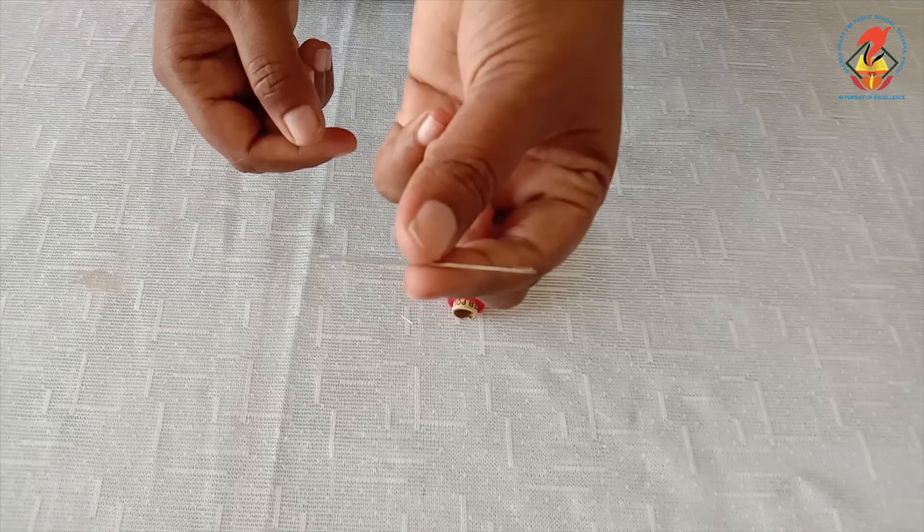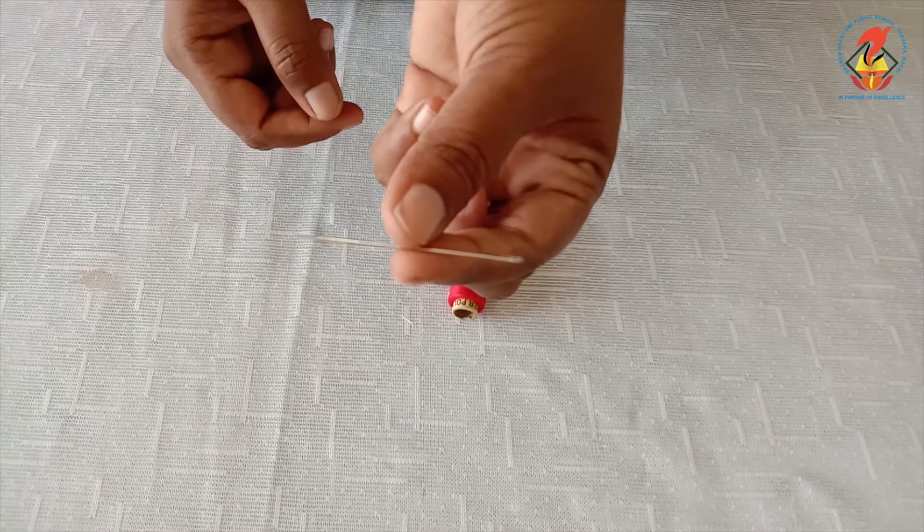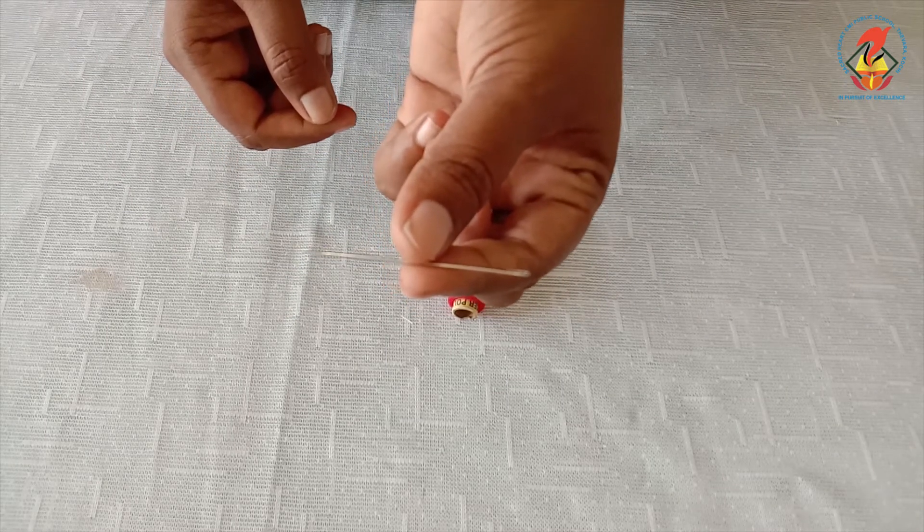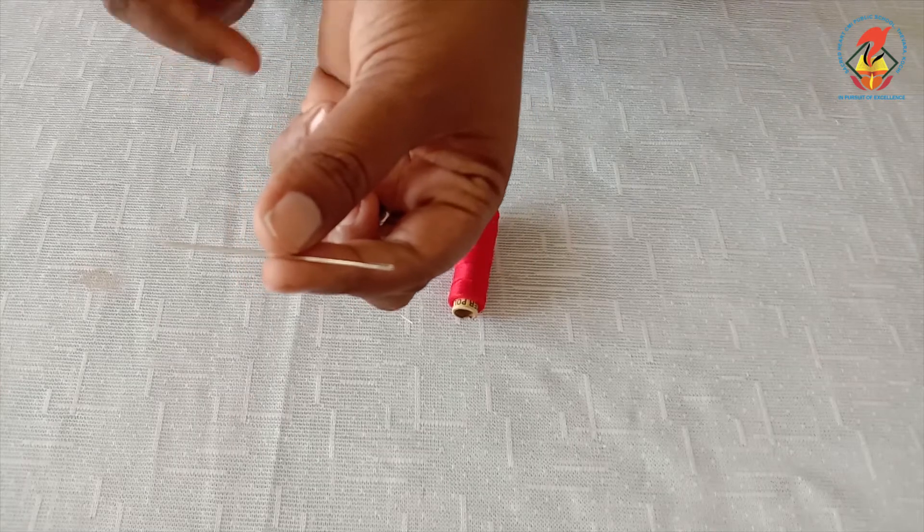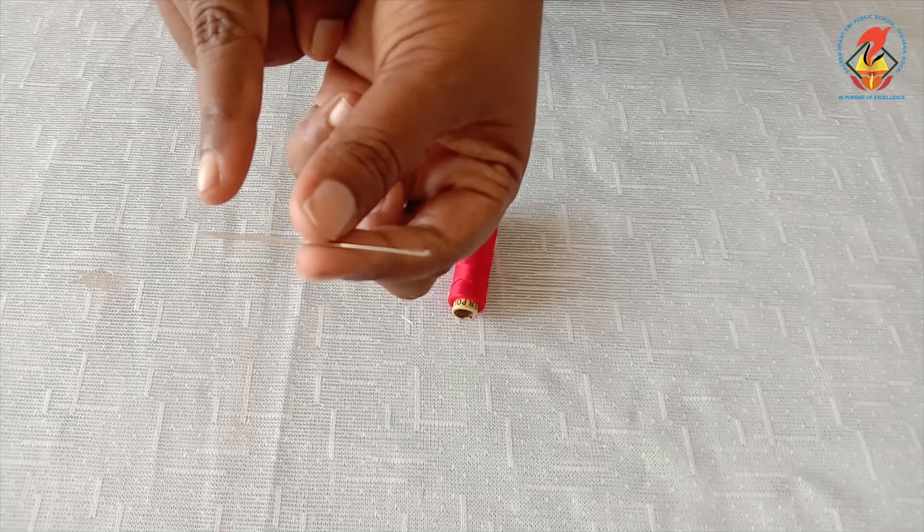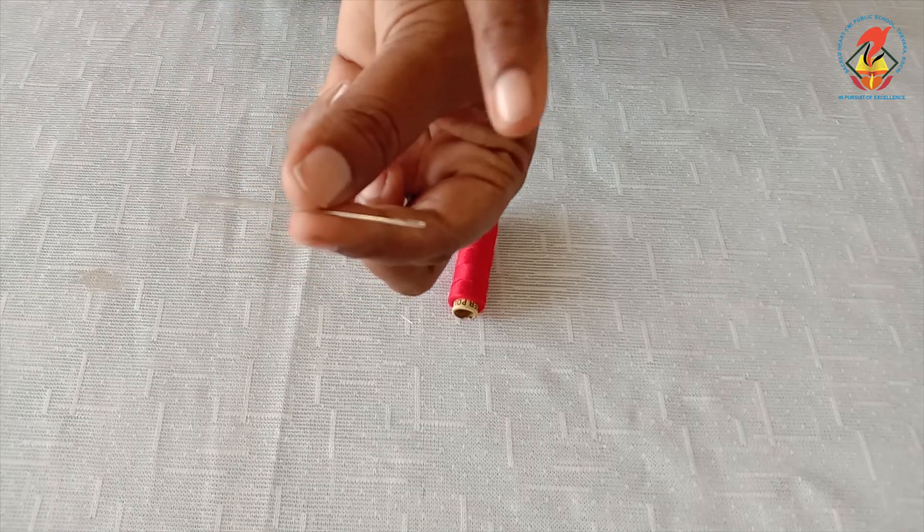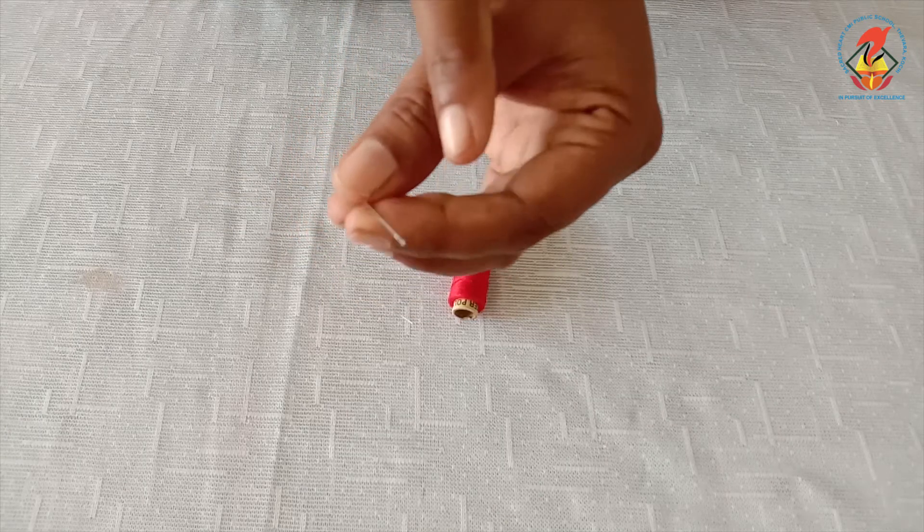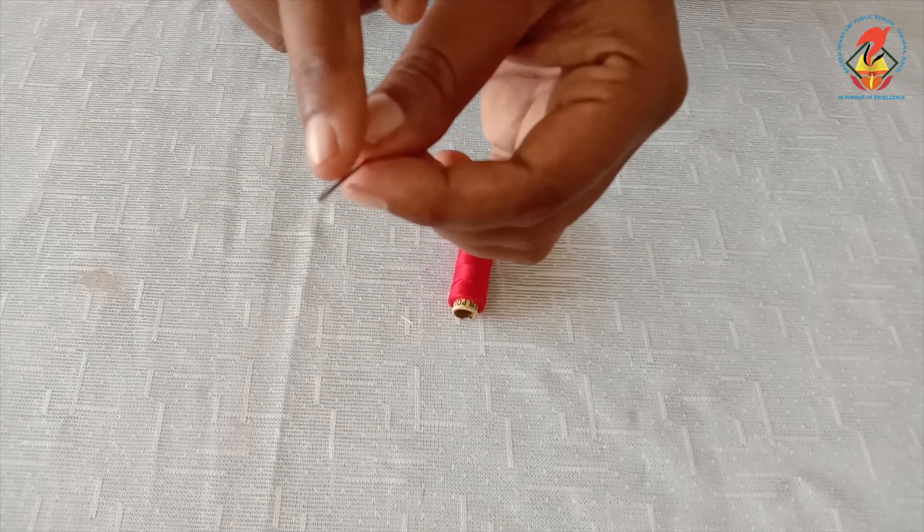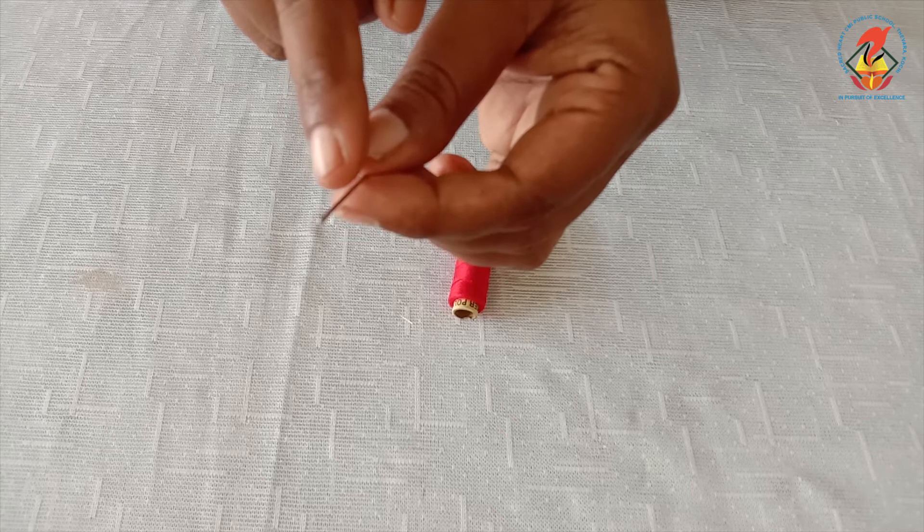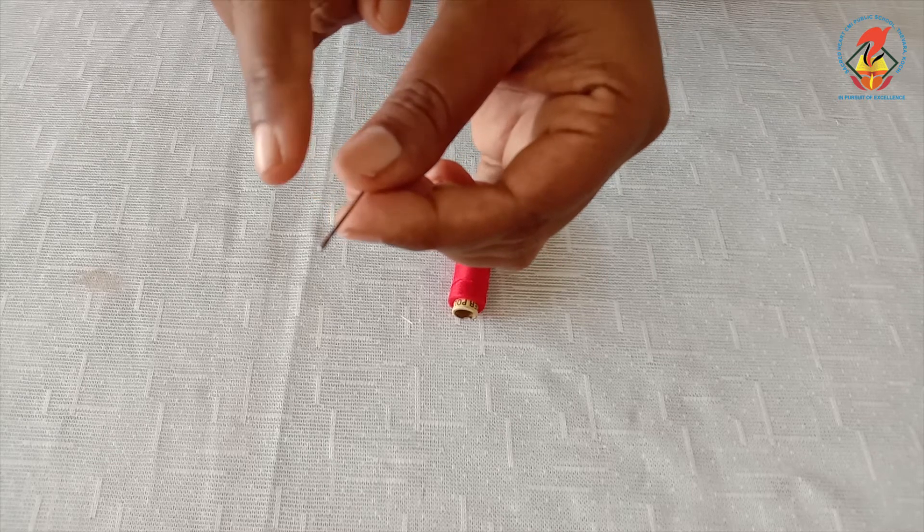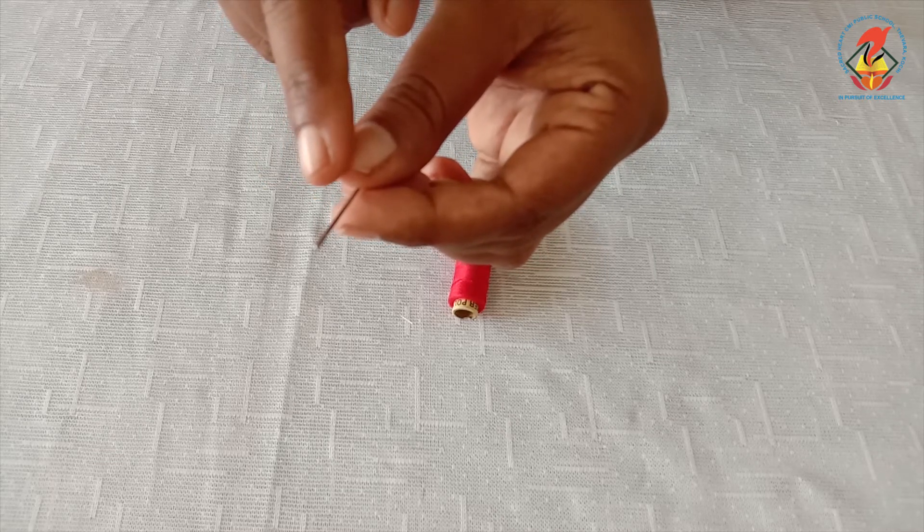Children, this is a hand sewing needle. It has two ends. One end is sharp and the other end has a loop which is called eye of the needle where we can insert the thread.